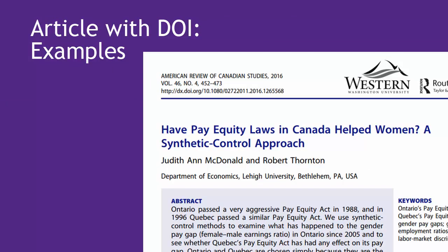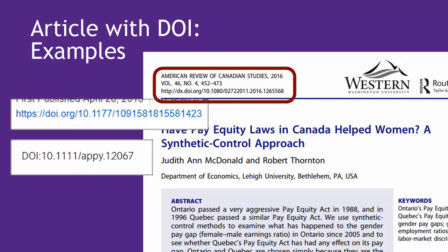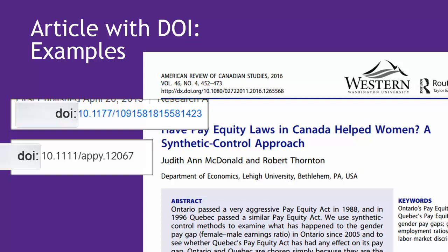Here is an example article with a DOI, located next to the volume, issue, and other publication information. Here are a few other examples of what a DOI looks like in various databases. Most DOIs start with a 10, then have a bunch of other numbers and letters separated by periods or slashes. Sometimes DOIs are written as a URL with HTTPS at the beginning, and sometimes they're just labeled DOI. MLA wants them written with just a lowercase "doi" colon before the numbers starting with 10, so sometimes you need to edit it.